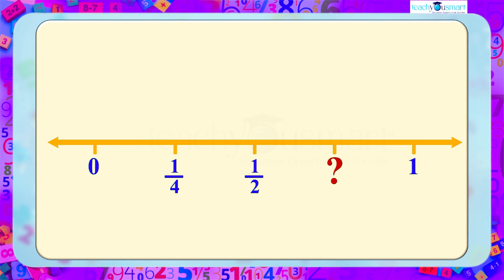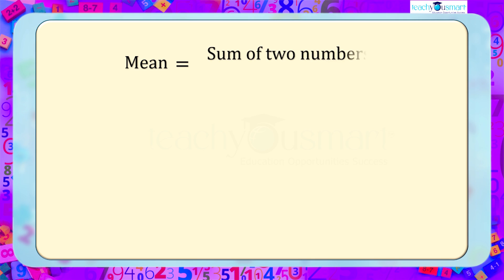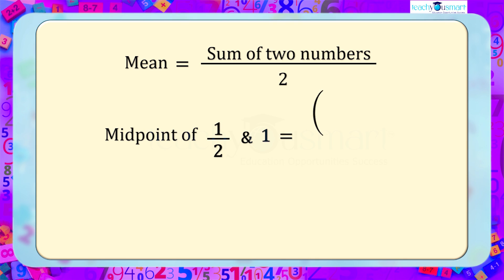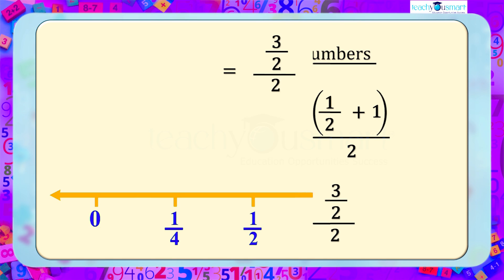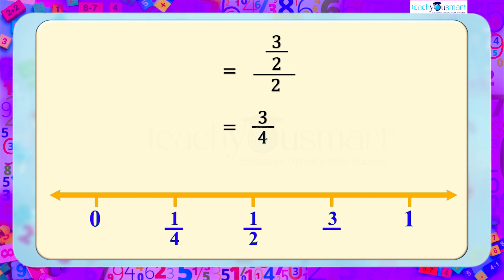Here we have to find the midpoint of two numbers. By taking the mean of these two numbers, we get its midpoint. That is, mean equals sum of two numbers divided by 2. Therefore, the midpoint of 1/2 and 1 is (1/2 + 1) / 2 = 3/2 ÷ 2 = 3/4, which is the rational number between 1/2 and 1.